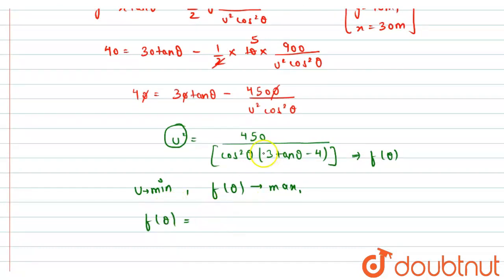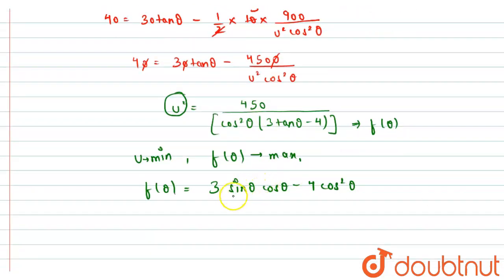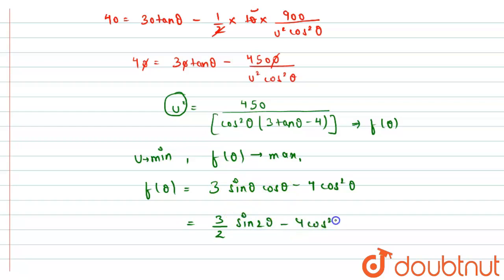Let me write f(θ) first. Multiplying cos²θ inside: f(θ) = 3·sinθ·cosθ − 4·cos²θ, writing tanθ as sinθ/cosθ so one cosθ cancels. Further, I write sinθ·cosθ in terms of sin2θ by multiplying 2 in denominator and numerator, giving f(θ) = (3/2)·sin2θ − 4·cos²θ.